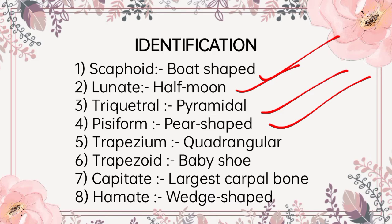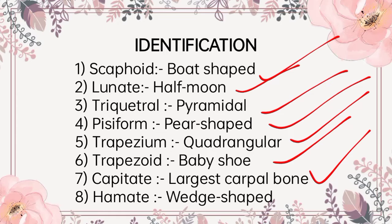Trapezium is quadrangular in shape and has a crest and a groove anteriorly. It has a saddle — meaning concavo-convex articular surface distally. Trapezoid resembles the shoe of a baby. Capitate is the largest carpal bone which has a rounded head. Hamate is wedge-shaped with a hook near its base.